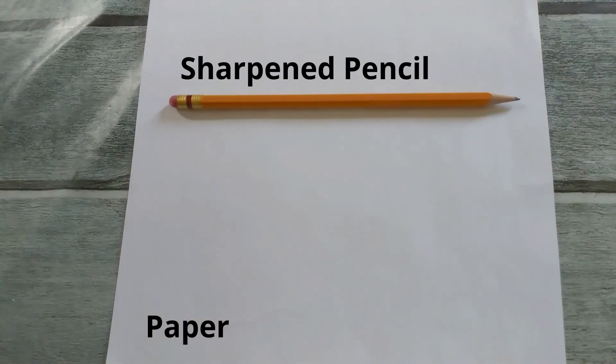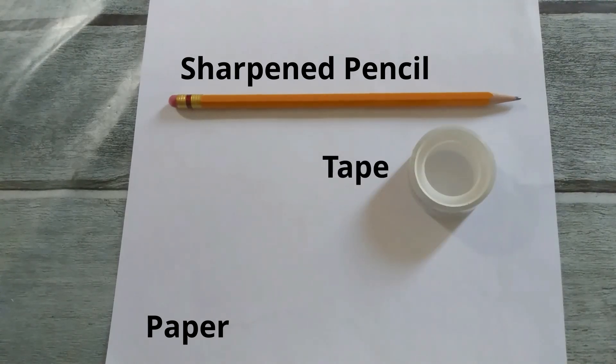For the first activity you're going to need a blank piece of paper, a sharpened pencil, clear tape, and a pair of scissors.